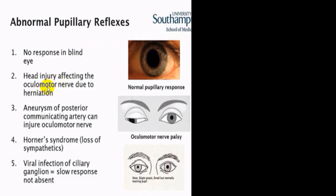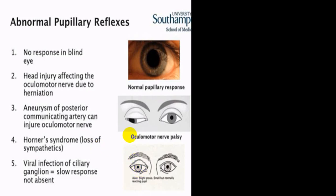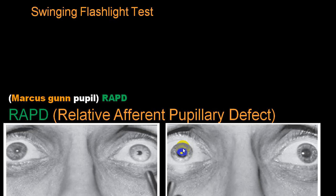In Horner's syndrome, because of loss of sympathetic innervation, dilation is absent, so there is a pinpoint pupil — very characteristic, with partial ptosis. In oculomotor palsy from a communicating artery aneurysm, there is a dilated pupil. Loss of sympathetic tone means the dilator pupillary fiber is not working, producing a pinpoint pupil characteristic of Horner's syndrome.